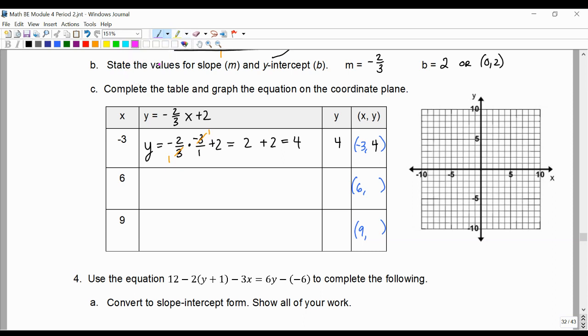And it isn't a bad idea to plot these as you go. So we have negative 3, 4. We also have our y-intercept, which is at 0, 2. We can plot that one as well.